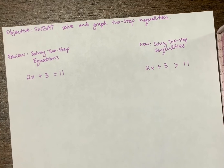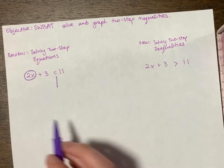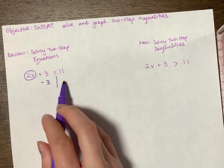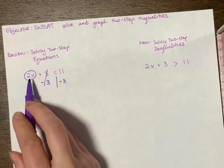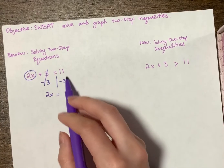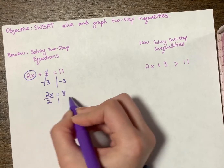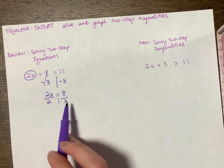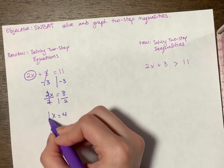So solving a two-step equation — I'm going to draw my line and circle my variable term. I want to get rid of the plus three first by subtracting three from both sides. The threes cancel, so I bring down 2x. Two x equals 11 minus three, which is eight. Then I draw my line and divide by two on both sides, because two and x were multiplied together. Two divided by two cancels, giving me x equals eight divided by two, which is four. So my answer is x equals four.